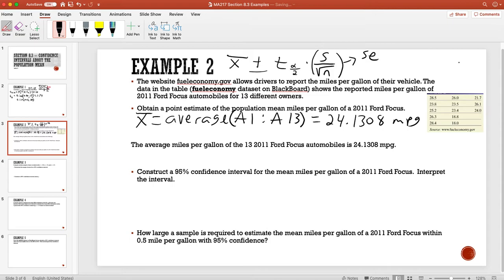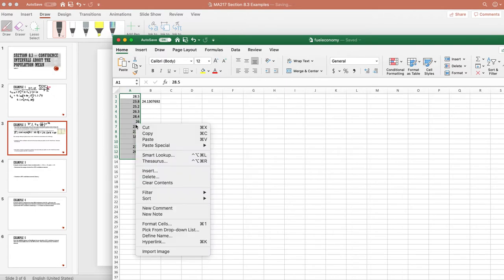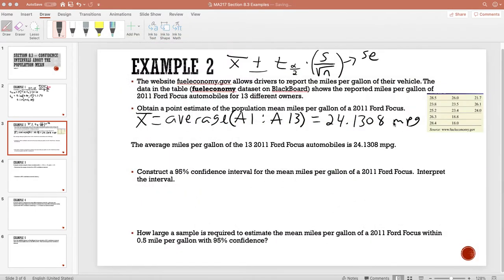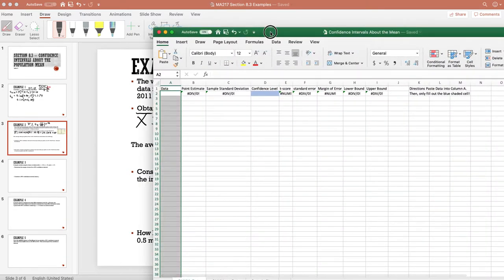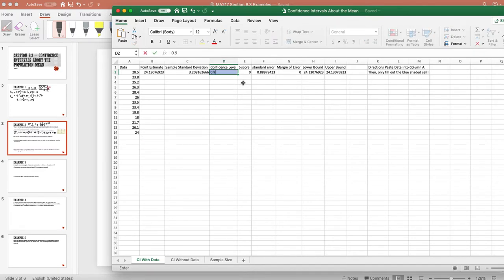Once we have the data in Excel, which was in this particular column in the template that I provide, all we have to do is paste that in here. It gives us a sample standard deviation of 3.2082. We need to identify the confidence level which is 0.95, and it gives us that confidence interval.